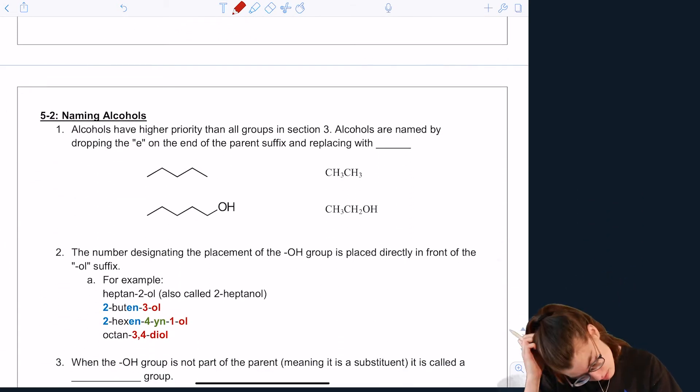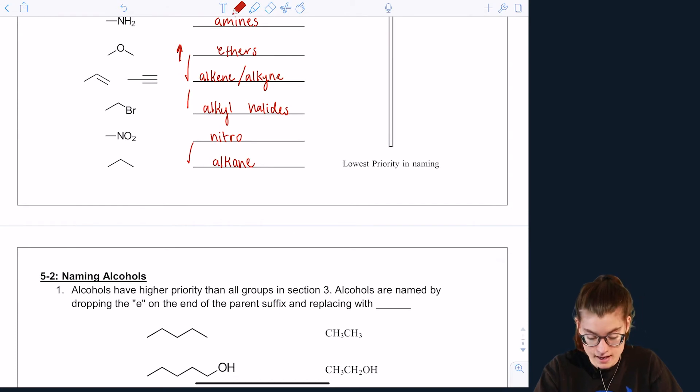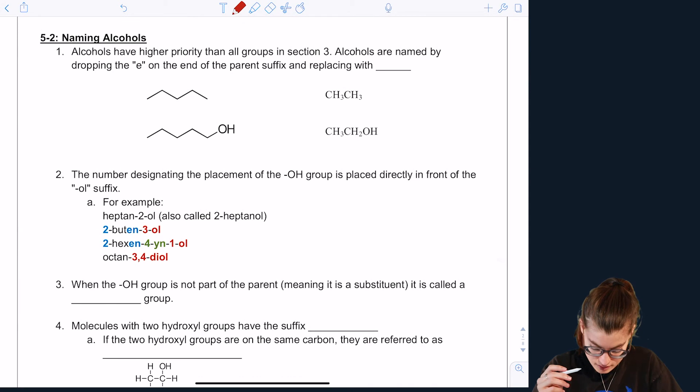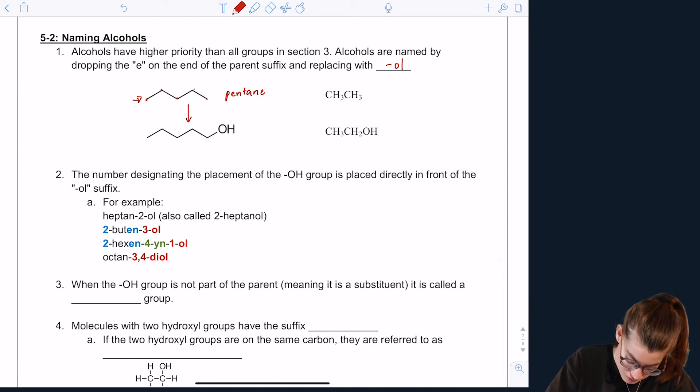So for example, alcohols. Well, alcohols of course have higher priority than alkanes, alkyl halides, and alkenes or alkynes. And alcohols are named by dropping the E on the end of the parent name and replacing with OL. So for example, this molecule right here is one, two, three, four, five carbons long. So this would be pentane. But if we had an alcohol group on this fifth carbon, for example, then it wouldn't be called pentane, remember, because we're going to drop the E and add OL.